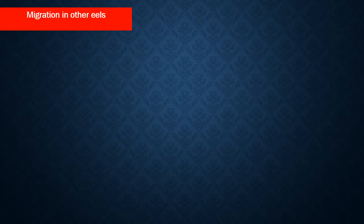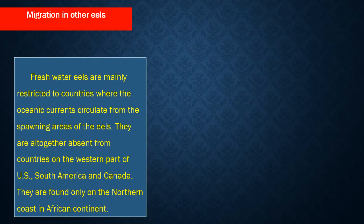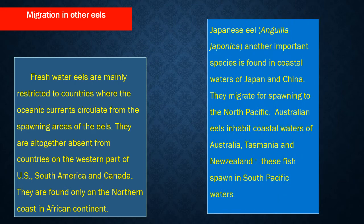Freshwater eels are mainly restricted to countries where oceanic currents circulate from the spawning areas of the eels. They are altogether absent from the western parts of the US, South America, and Canada, and are found only on the northern coast of the African continent. Japanese eels, another important species, are found in coastal waters of Japan and China and migrate for spawning to the North Pacific. Australian eels inhabit coastal waters of Australia, Tasmania, and New Zealand, and these fish spawn in South Pacific waters.